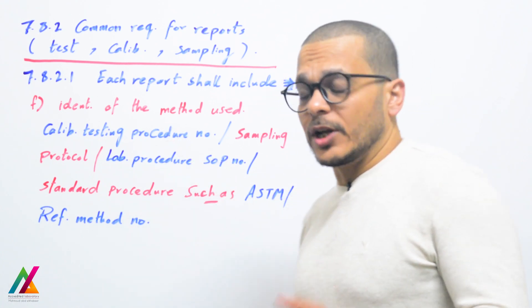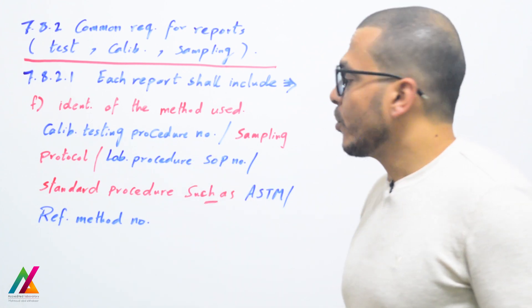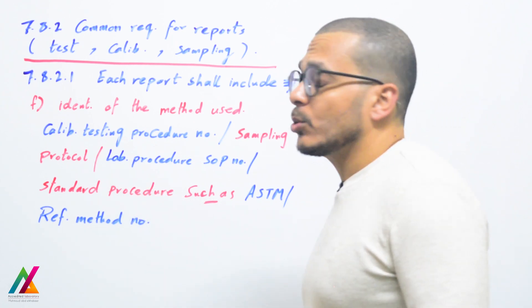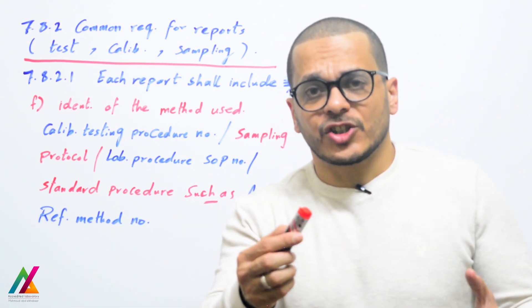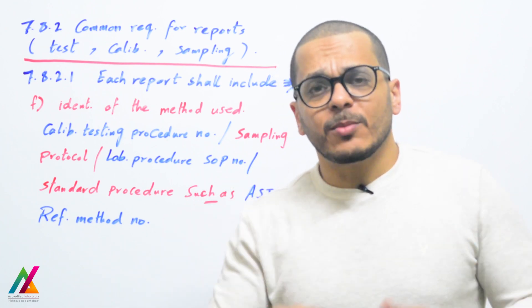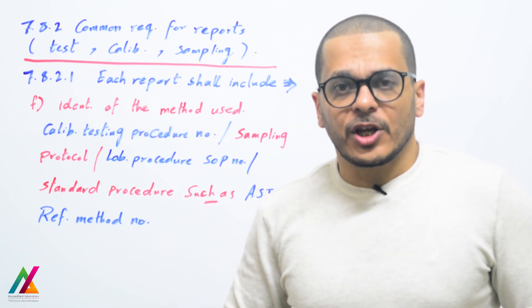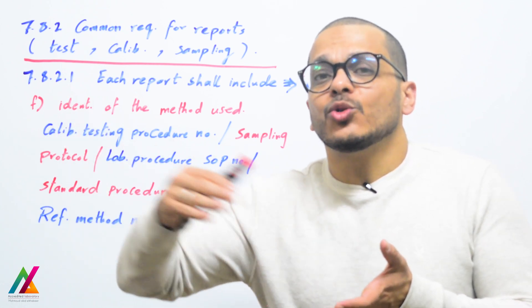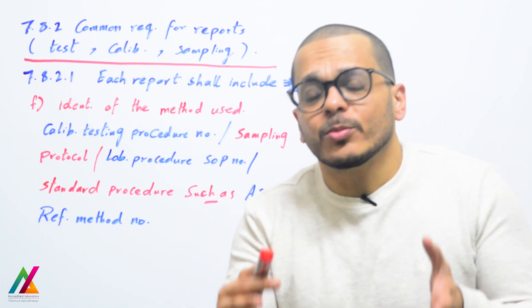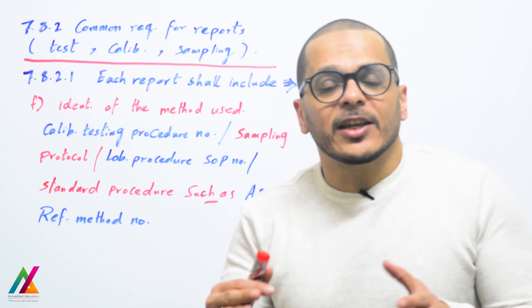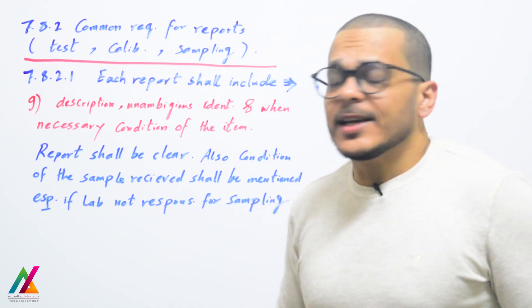The identification of the method used — such as the calibration or testing procedure number, sampling protocol, lab procedure, standard operating procedure number, or a standard reference method such as ASTM — shall also be included in the final report. However, if you have different parameters for each sample, it may be difficult to add the reference method number for each parameter. In that case, this information will be mentioned in your SOPs or quality manual and will be readily available for the customer upon request.